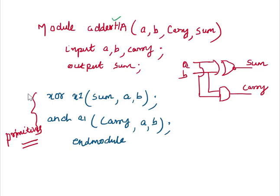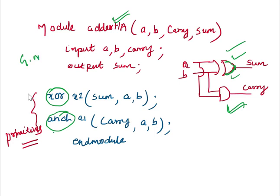Here is a half-adder circuit. This circuit contains one XOR gate and one AND gate. If you write the Verilog code for the half-adder using only primitives — one XOR primitive and one AND gate primitive — then this is a pure gate-level modeling technique, because we have included only primitives to design this logic.